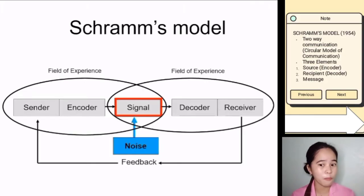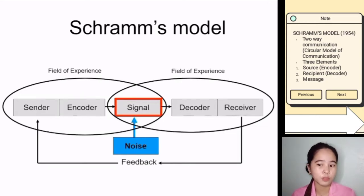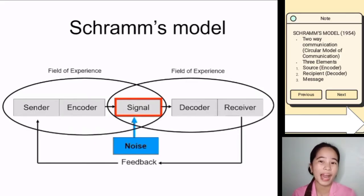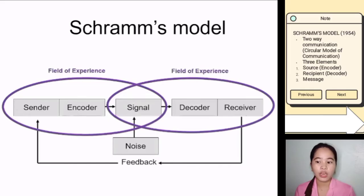Noise could also be something that happened within the environment — is the room too hot, too cold, too dirty, or does it smell bad? All these things could impact the signal. Another very important element in Schramm's model of communication is the overlapping field of experience between the sender and the receiver.